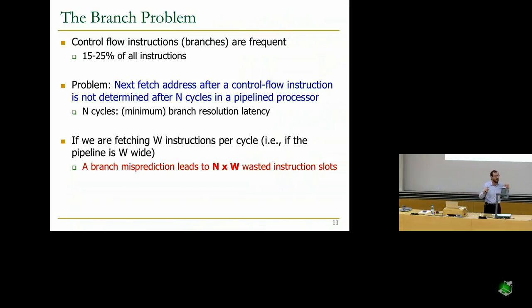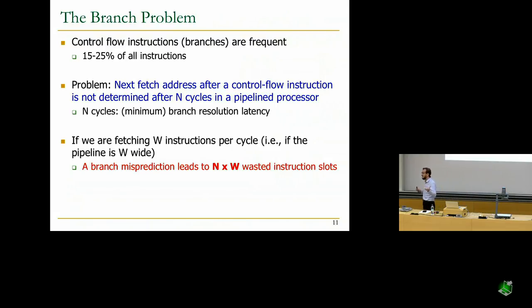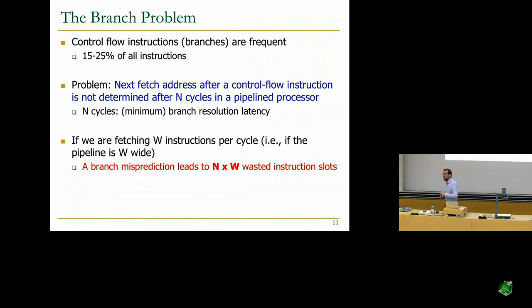That's the cost of a branch misprediction. In Pentium 4, minimum n is 20 and w is about 3, so you waste roughly 60 instructions.